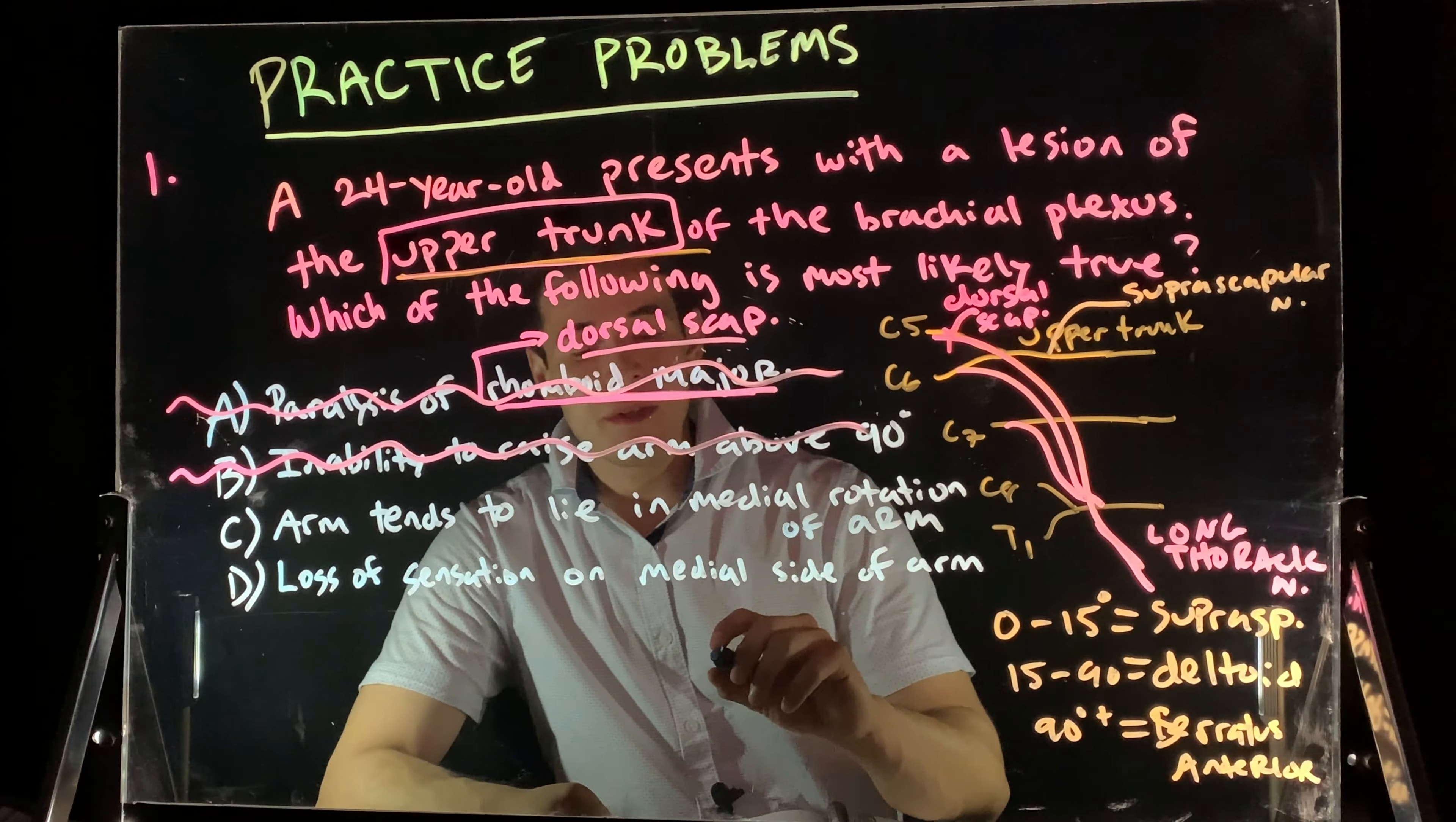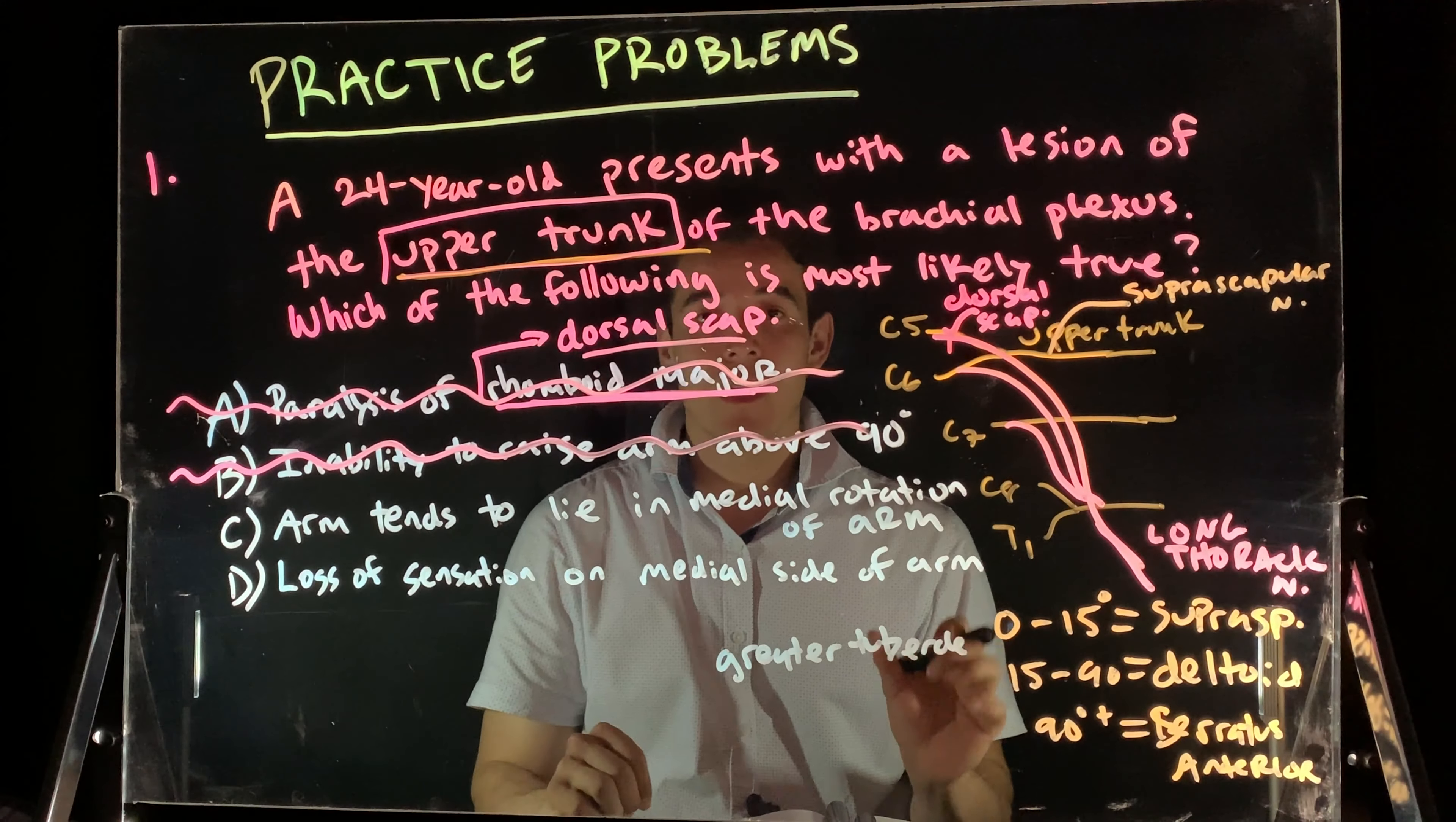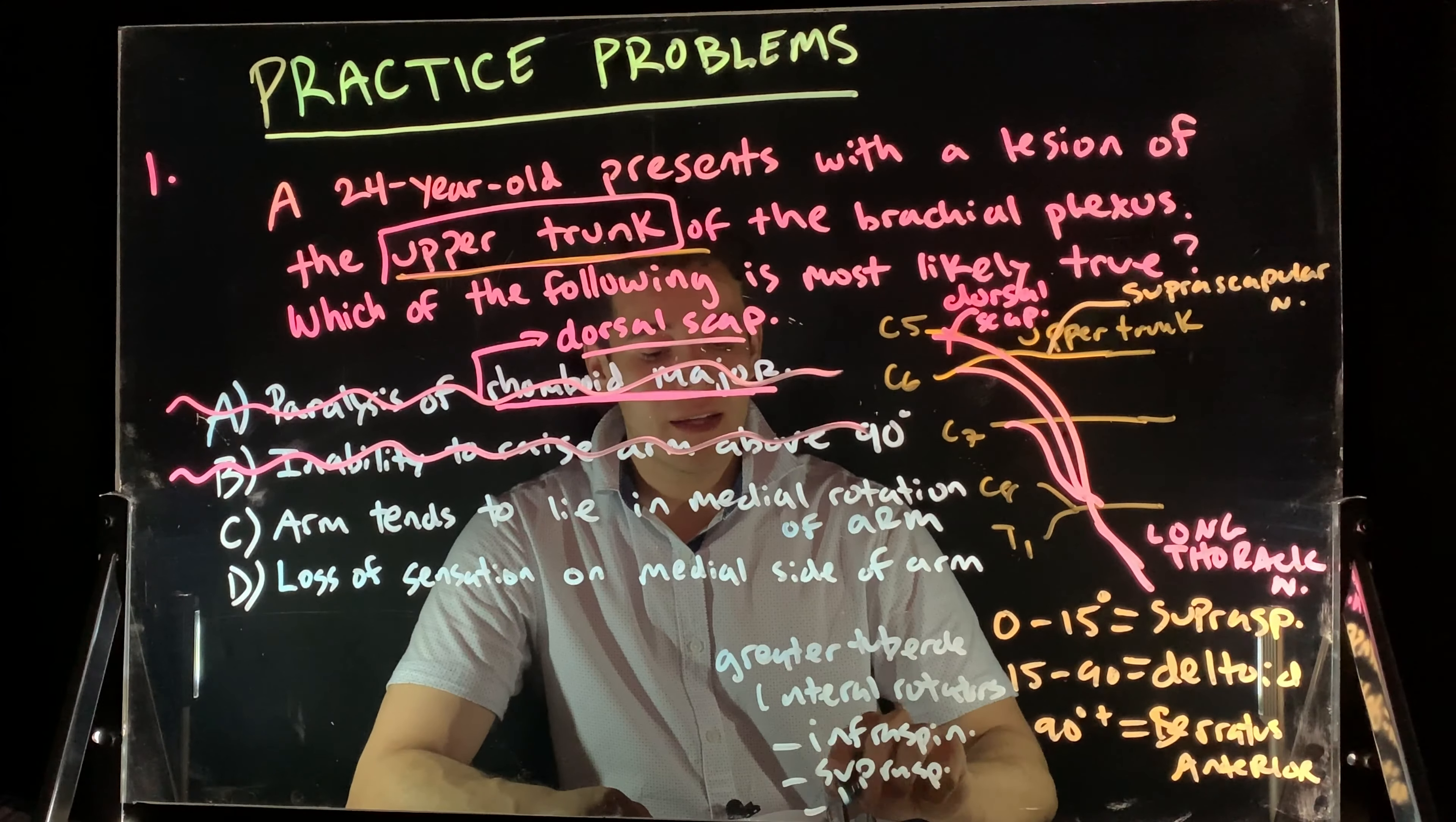So, essentially, you have some muscles inserting onto the greater tubercle of the humerus. These are essentially coming from the posterior side of the arm and are going to help us laterally rotate. So, these are lateral rotators. These would include the infraspinatus, supraspinatus, and teres minor.